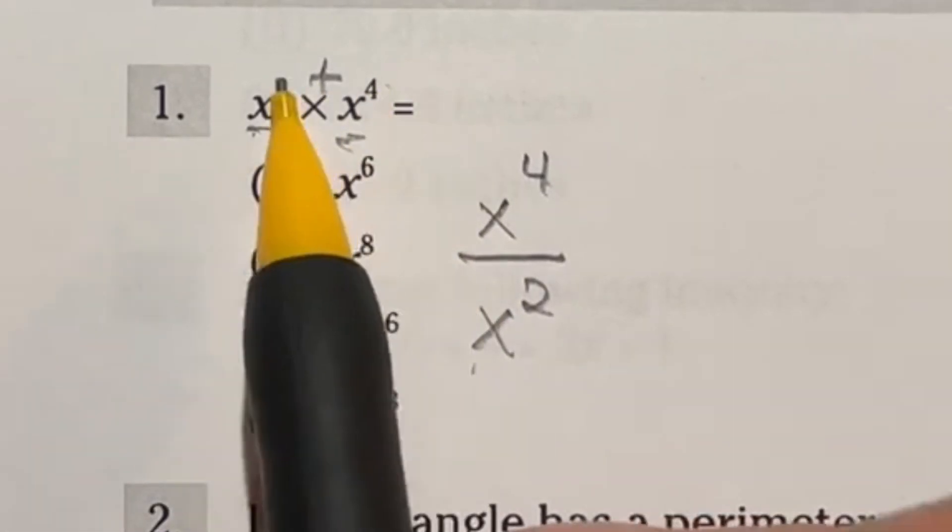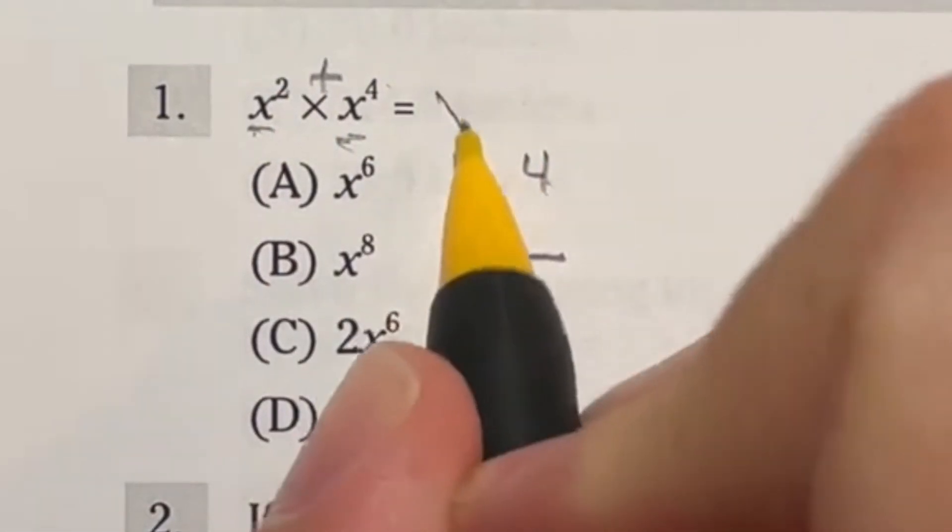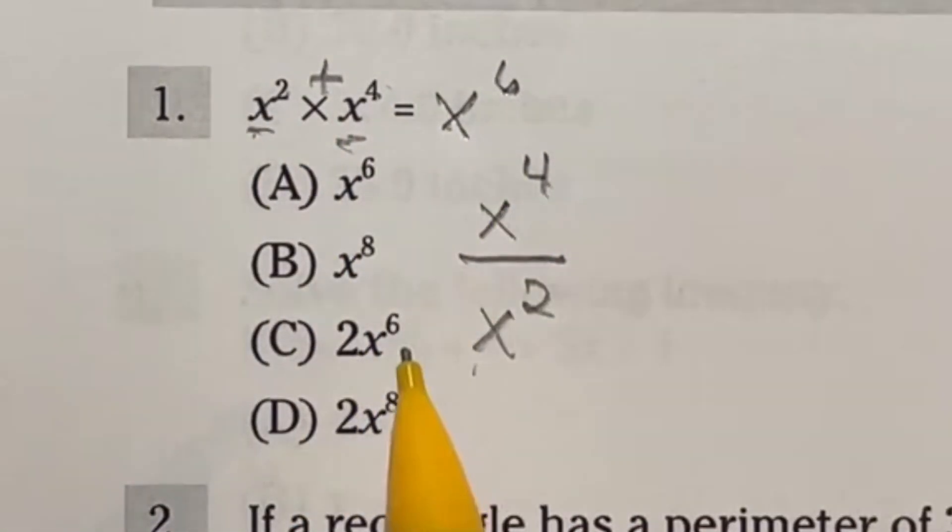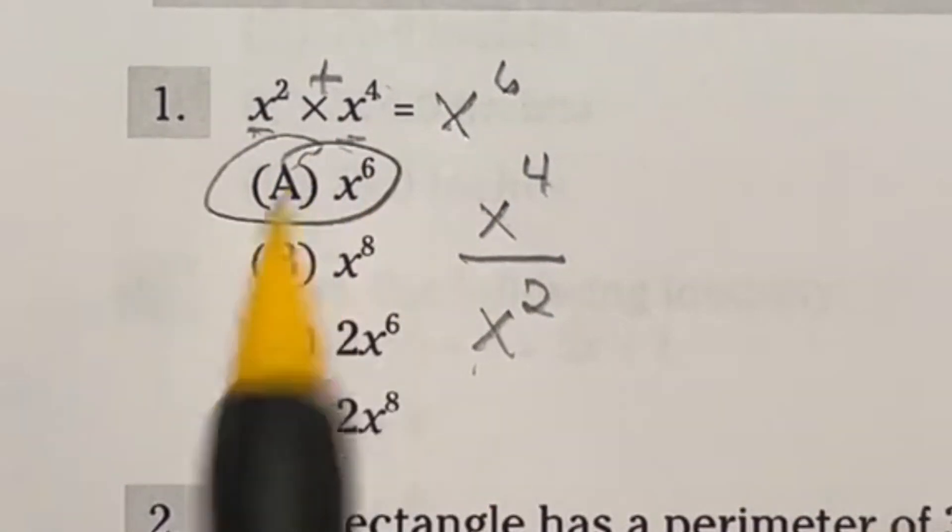In this case, we're just going to add our two exponents together, giving us a total of x to the sixth power, doing the four plus two. And that means our final answer here is A.